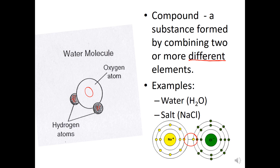You have a new substance that has different properties. We talked about how sodium and chlorine have different properties when they're separate versus when they combine to make table salt. So a compound is still considered a pure substance, but it's made of different elements.